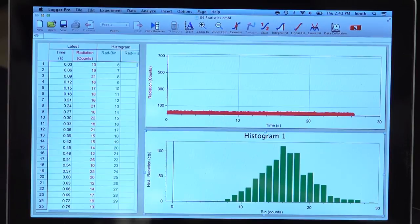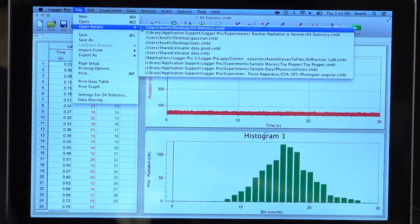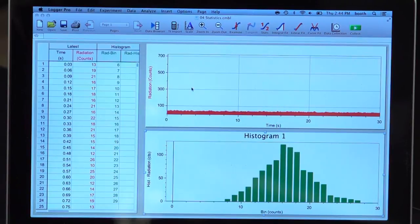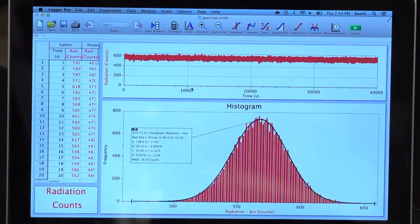Now, I took data all night last night to show what it would look like if we counted for over 40,000 time intervals. Let me show you what that one looks like. And the graph at the bottom of the screen is a histogram of the count frequency. The average number of counts in an interval in this case was up around 570. But you can see the shape of the distribution is that of a Gaussian. The black line is a Gaussian curve fit that I have applied in Logger Pro, also showing that this distribution approximates a Gaussian.